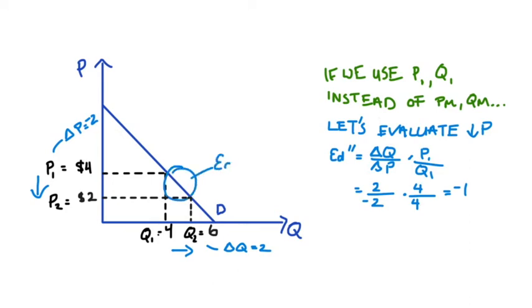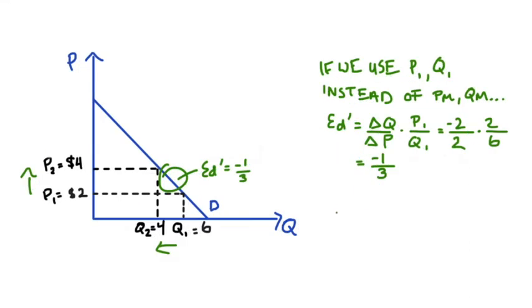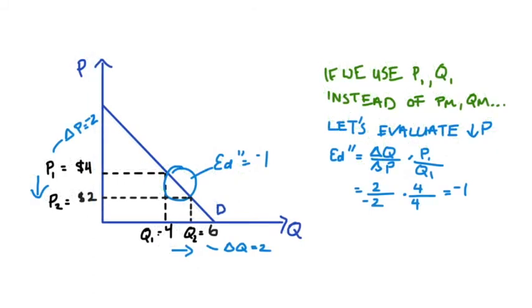So as you can see, evaluating the elasticity in this region of the demand curve when the price is increasing, well that gave us an elasticity of negative a third. But when we looked at the same region of the demand curve, but just a decreasing price, so from 4 to 2, our elasticity has come back as negative 1.